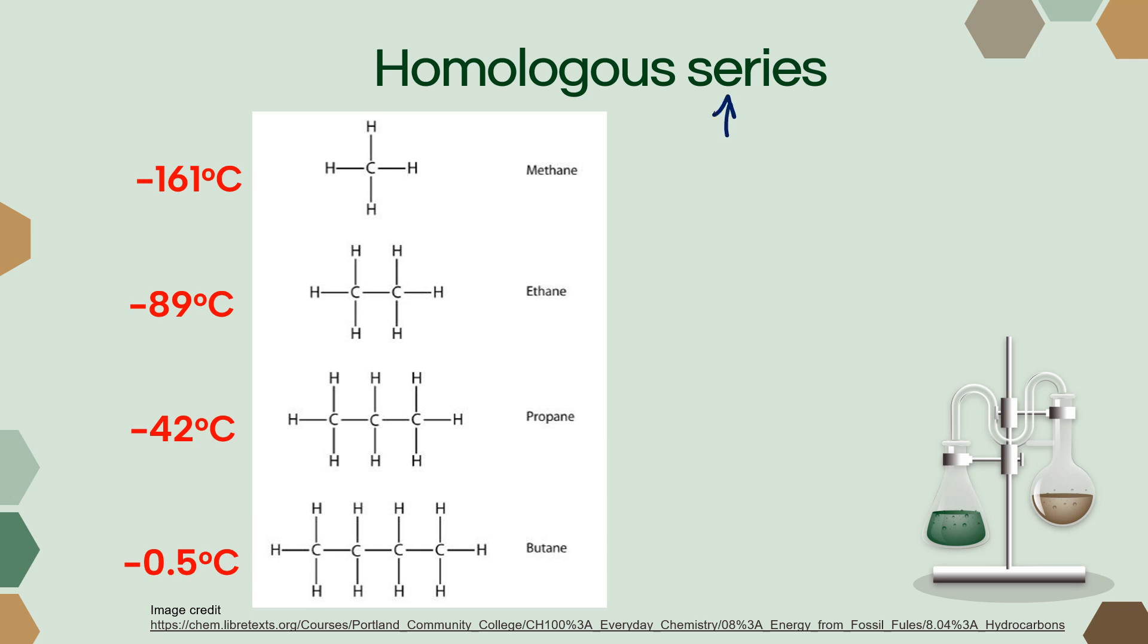Remember that homologous series are compounds that have the same functional groups. They differ only by one CH2, so we're just lengthening that carbon chain. Here we have the alkane homologous series: methane, ethane, propane, butane. We could keep going—pentane, hexane, heptane. The only difference from one to the next is that we've added a CH2.